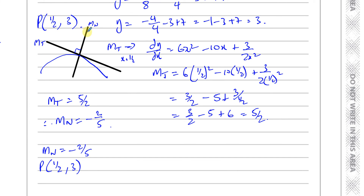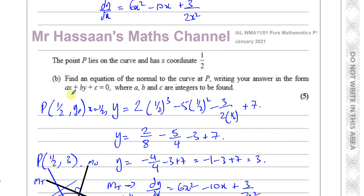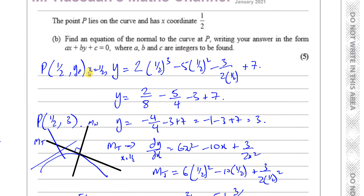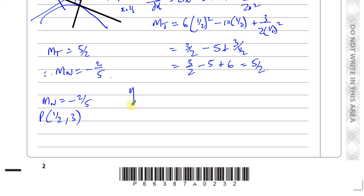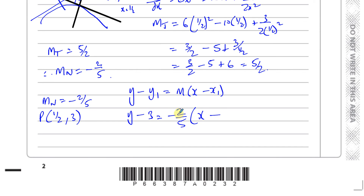The question asks for the equation of the normal in the form ax plus by plus c equals zero, where a, b, and c must all be integers. I'll use the form y minus y₁ equals m(x minus x₁). So: y minus 3 equals minus 2/5 times (x minus 1/2). Multiplying everything by 5 gives 5y minus 15 equals minus 2 times (x minus 1/2), which is minus 2x plus 1.